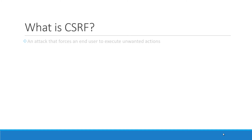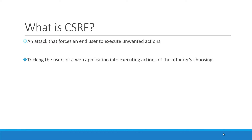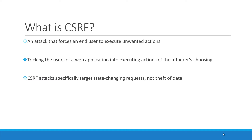What is cross-site request forgery? It's an attack that forces a user to execute unwanted actions on a web application in which they are currently authenticated. With a little help of social engineering, such as sending a link via email or chat, an attacker may trick the users of a web application into executing actions.